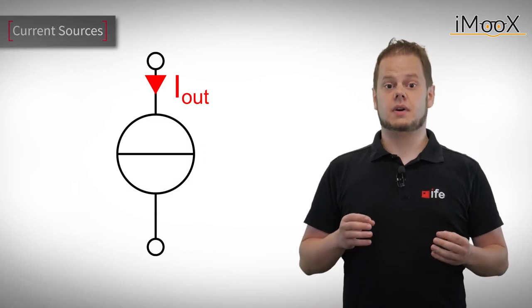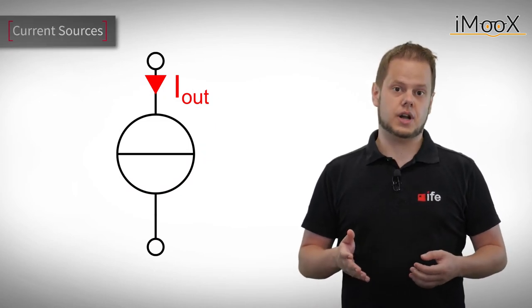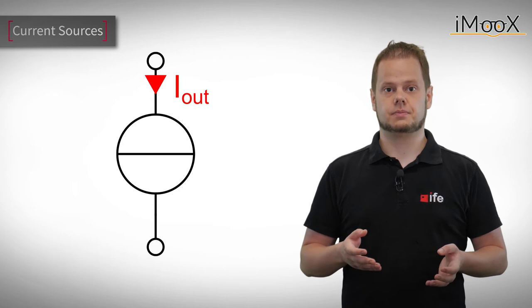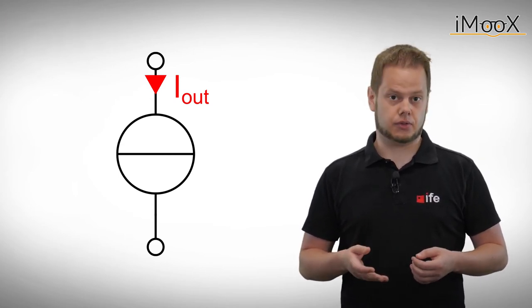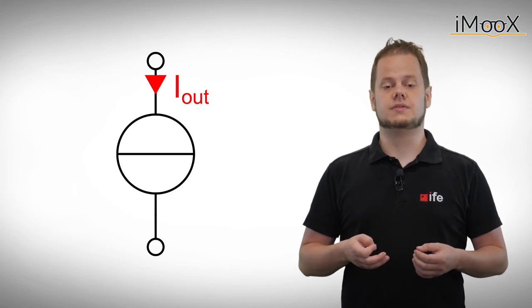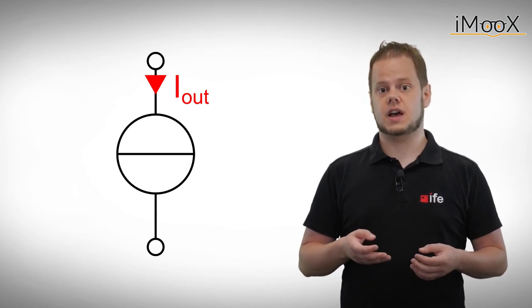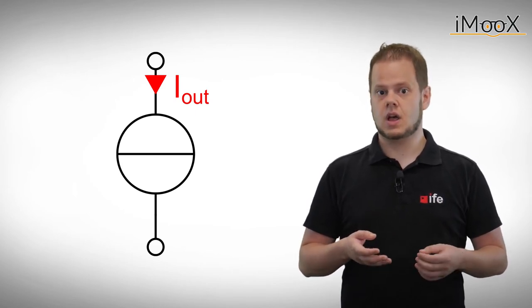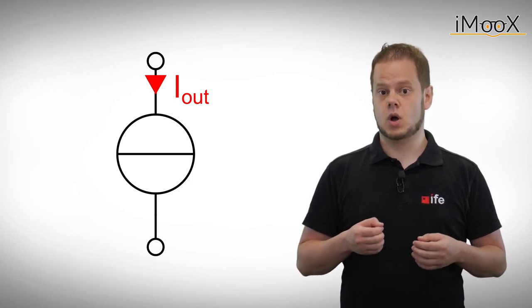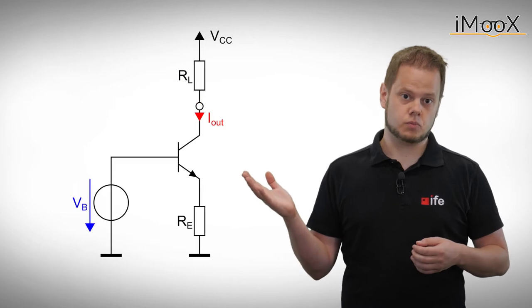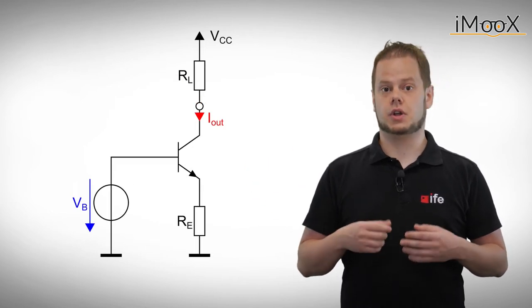A current source can deliver a preset output current, regardless of its output voltage. Transistors can be used to build a circuit which behaves like a current source. All we need is a voltage source, resistors and of course a transistor. For this example, we will use an NPN bipolar transistor. We wire them like this and analyze how the circuit works.